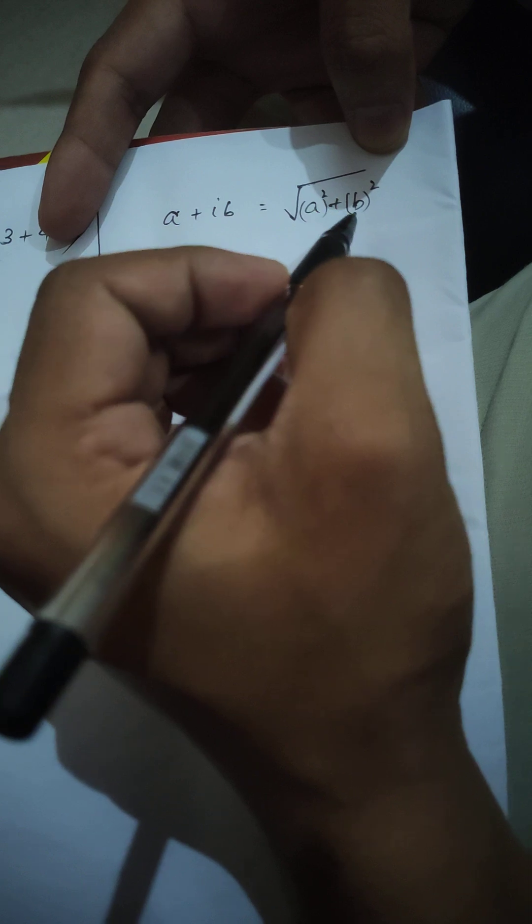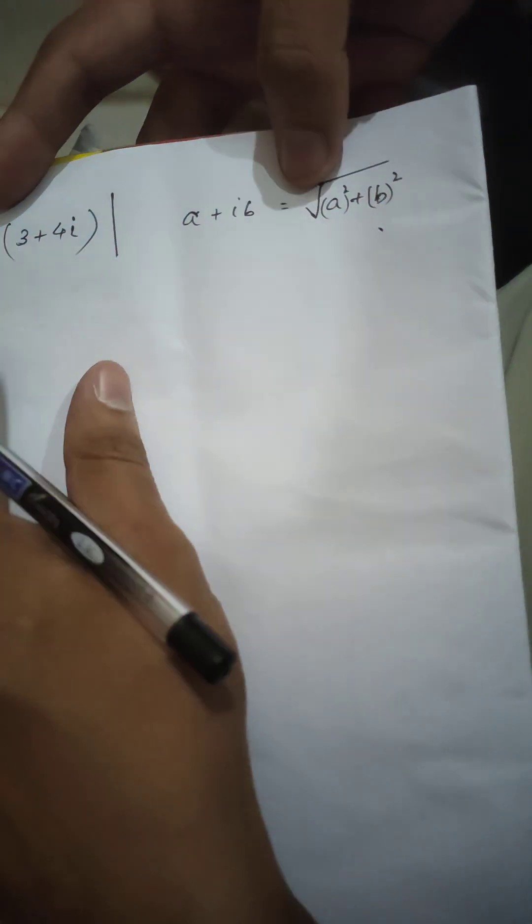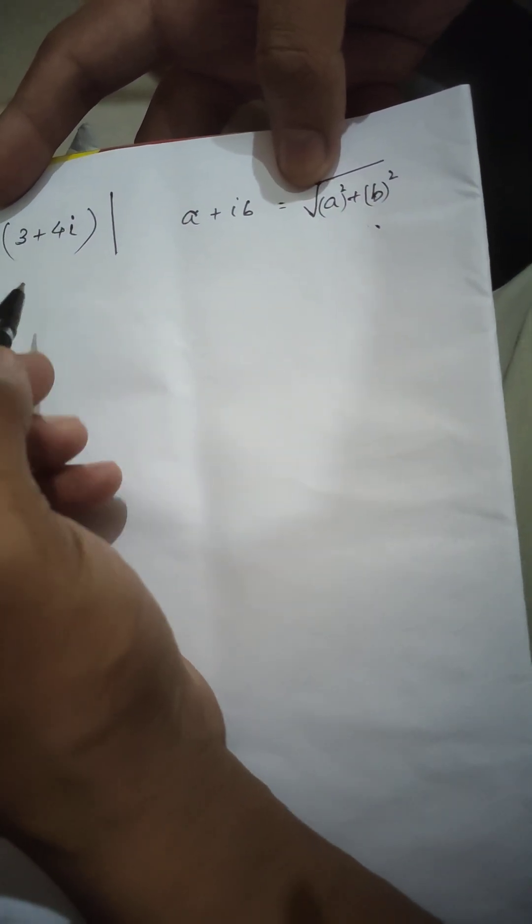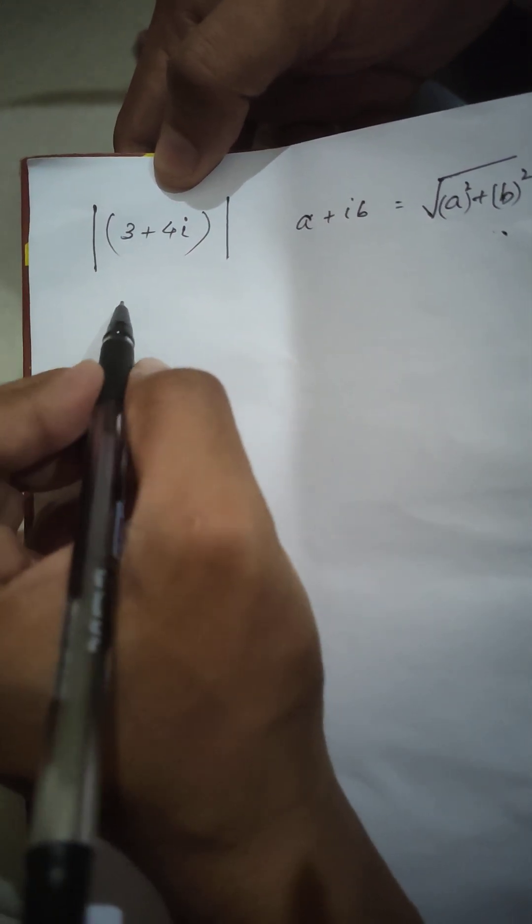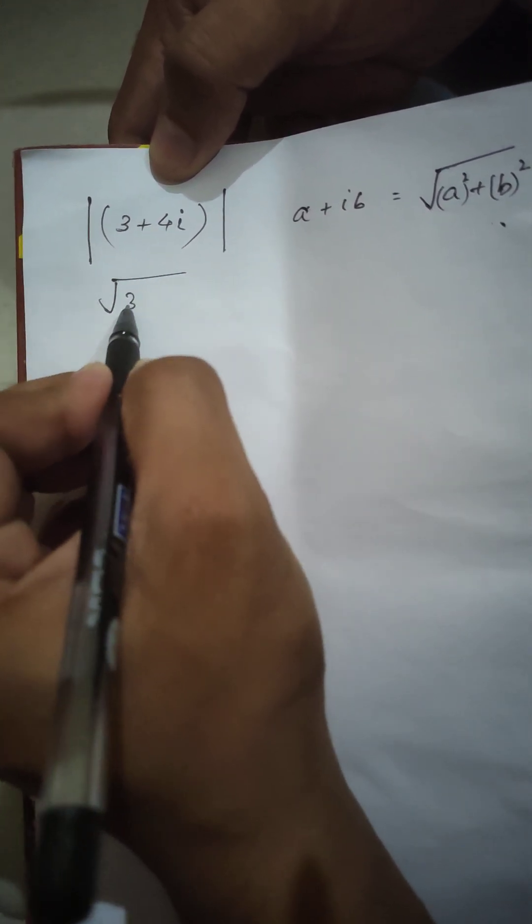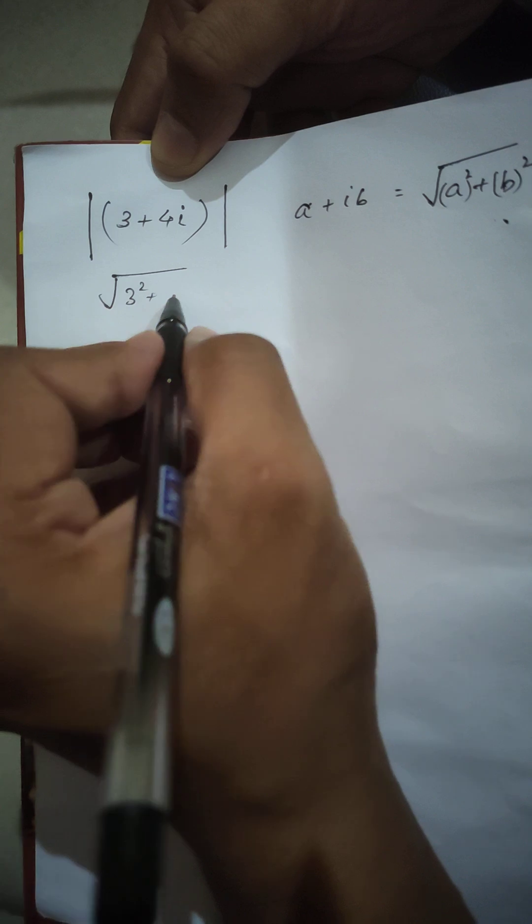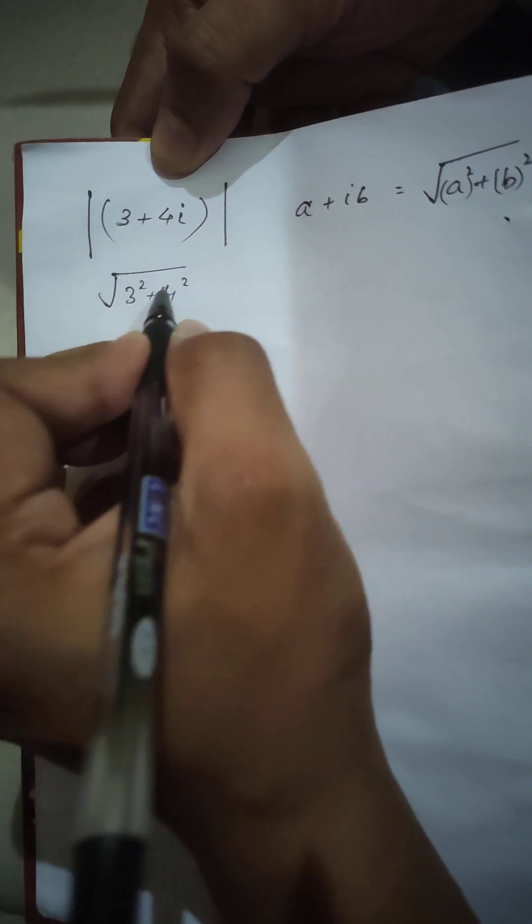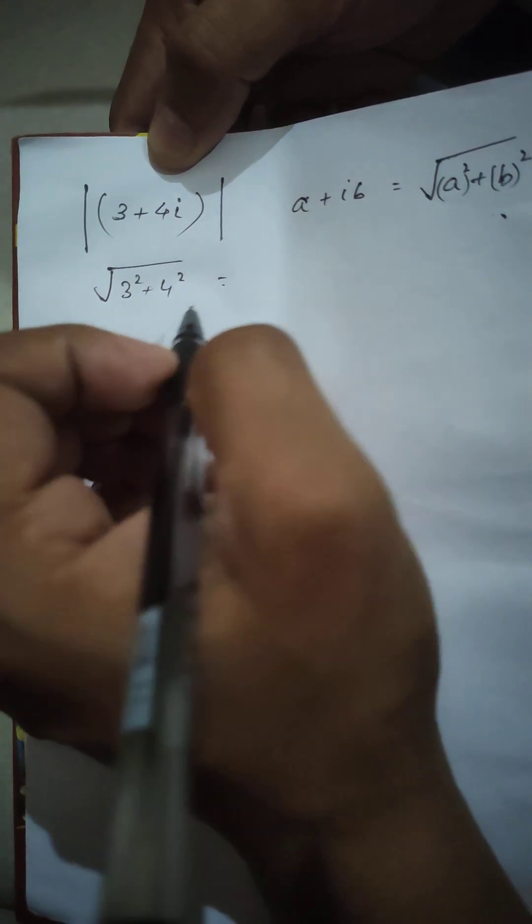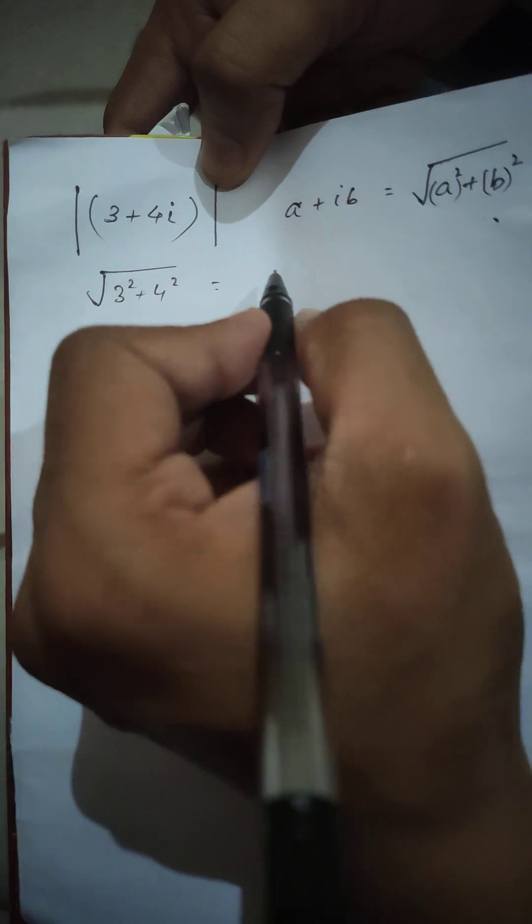This is the modulus. So here the number is 3+4i, so we will just take square root of 3 squared plus 4 squared, so that becomes 5.